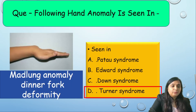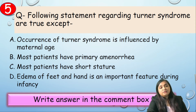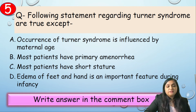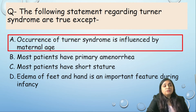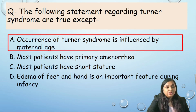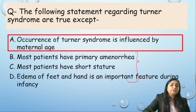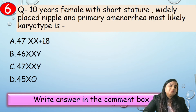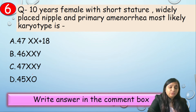Question 5: Which statement regarding Turner syndrome is true EXCEPT? Options: A) Occurrence is influenced by maternal age, B) Most patients have primary amenorrhea, C) Most patients have short stature, D) Edema of feet and hands is an important feature during infancy. Correct answer is A — Turner syndrome has no association with maternal age; the rest are correct. Question 6: A 10-year-old female with short stature, widely placed nipples, and primary amenorrhea — the most likely karyotype is 45 XO.